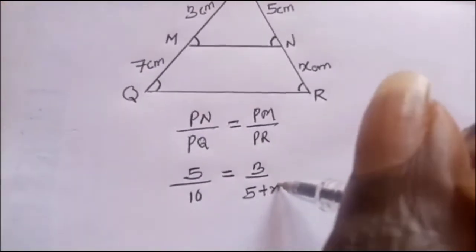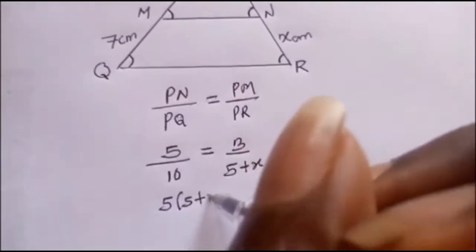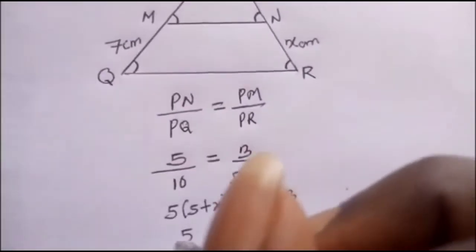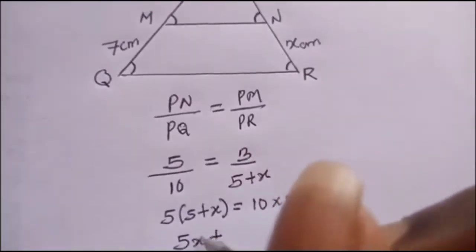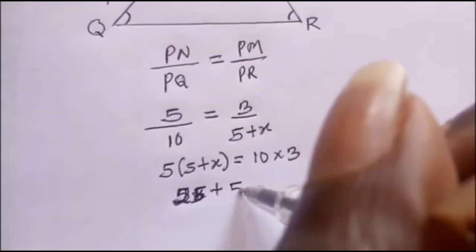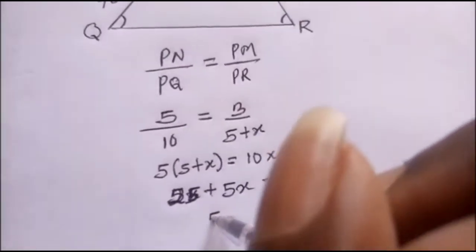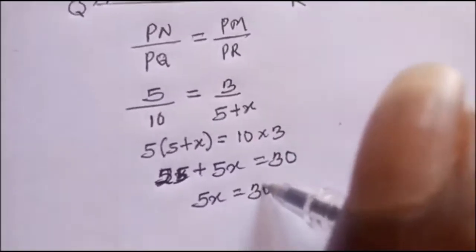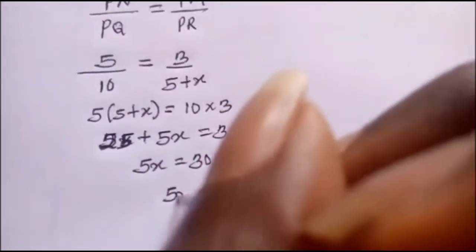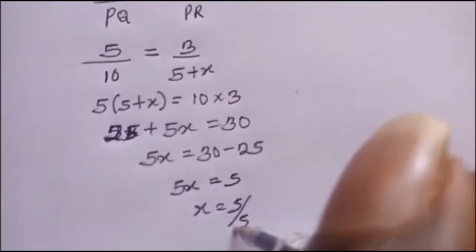So I'll be having 5 plus x. And we can cross multiply by saying that 5 times (5 plus x) equals 10 times 3. We have 25 plus 5x equals 30. I will have 5x equals 30 minus 25, so this will give me 5x equals 5. So x will be 5 over 5 and that will give me 1 centimeter.